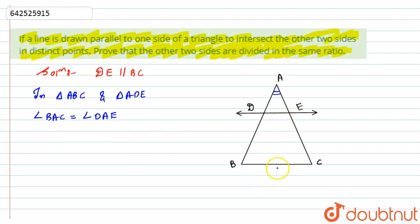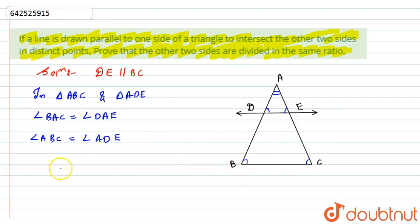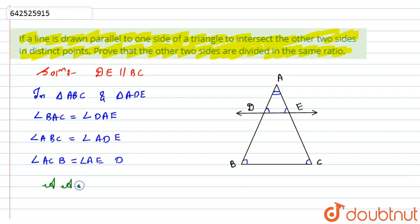Since DE is parallel to BC, angle D equals angle B because of corresponding angles. Hence, angle ABC equals angle ADE. Similarly, since DE is parallel to BC, angle E equals angle C because of corresponding angles. Hence, angle ACB equals angle AED.